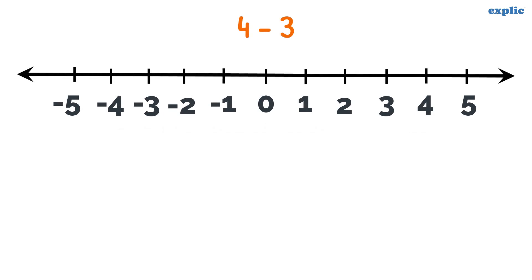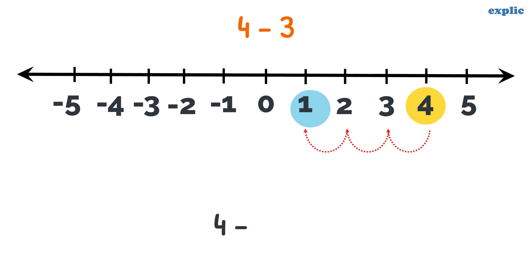To subtract 3 from 4, first locate 4 on the number line. Then move 3 steps in the left direction. The number we land on is the answer.